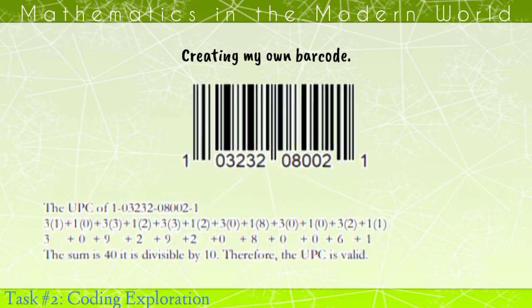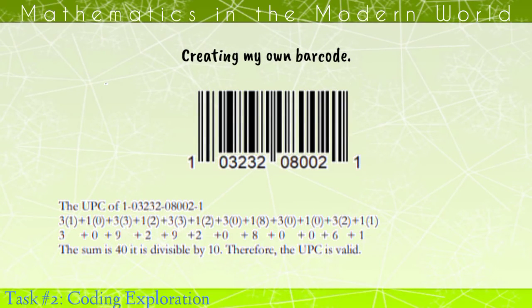Now, creating my own barcode. This is my barcode. The UPC of 1-0-3-2-3-2-0-8-0-0-2-1.